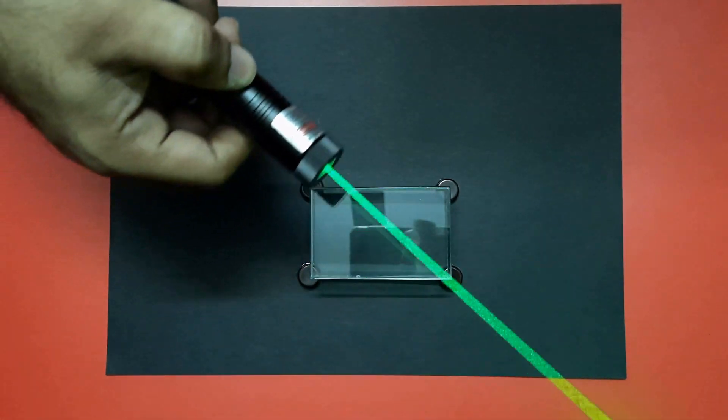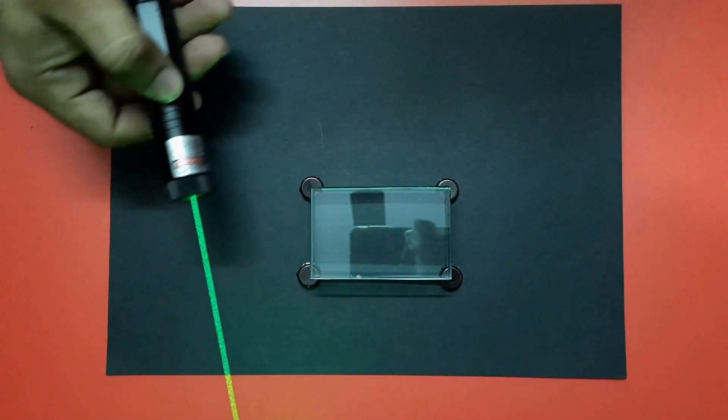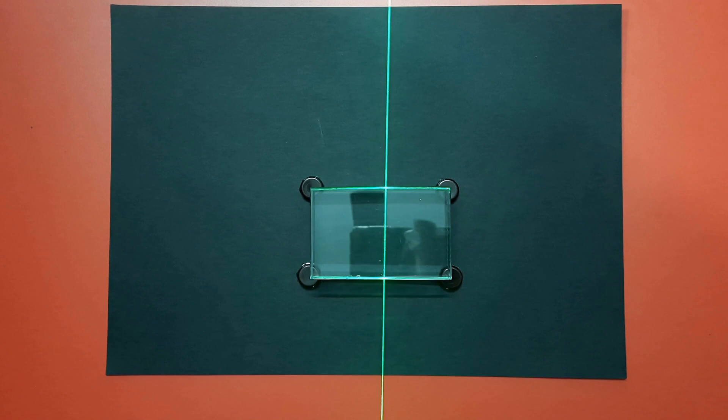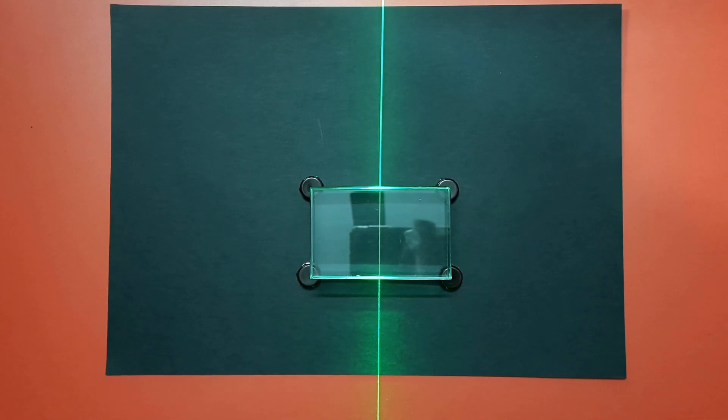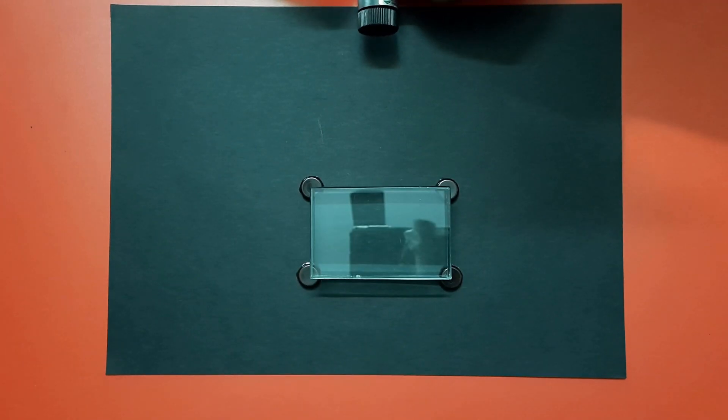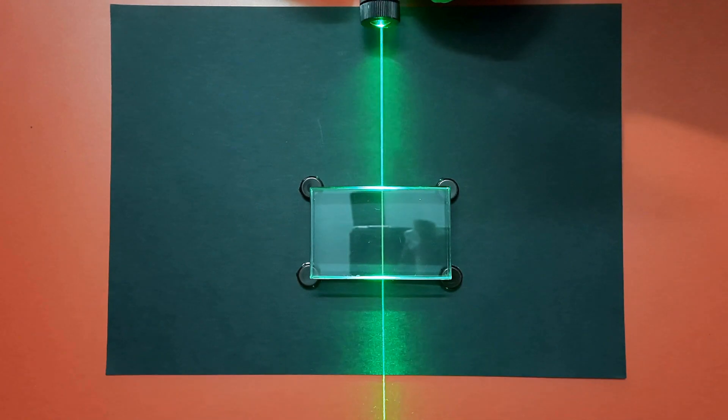Let's first discuss refraction with normal incidence of laser beam. Here the laser beam is falling normally on the glass slab, that means angle of incidence is zero degrees, so here light travels straight in glass slab without any bending or refraction.